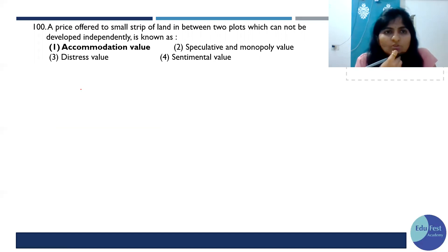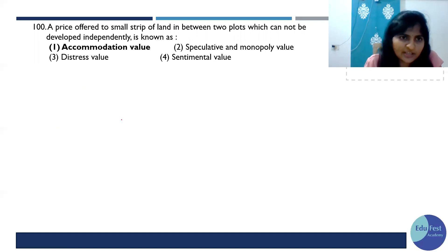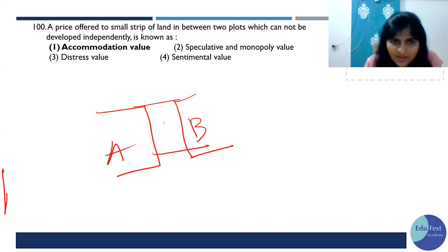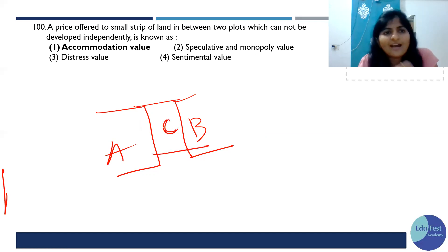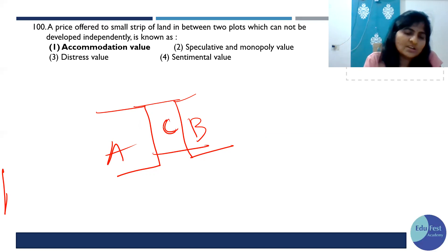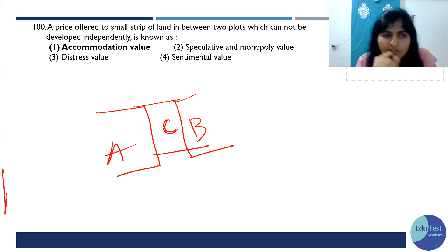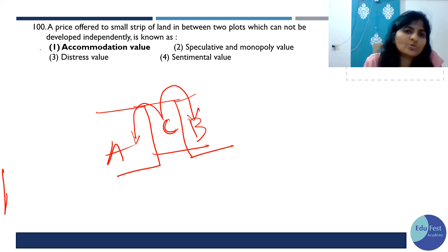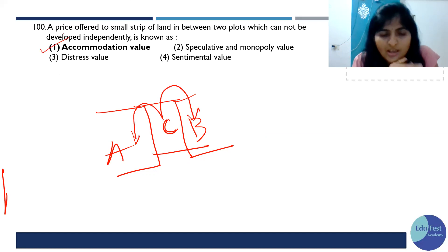Accommodation value: a small strip of land in between two plots which cannot be developed independently. Imagine two plots — one owned by A, one by B — and a small strip owned by C. C cannot do anything with that strip because of setback rules, and as such no usable plot remains. So the owner either has to accommodate it in plot A or sell it to plot B. That value is called accommodation value.